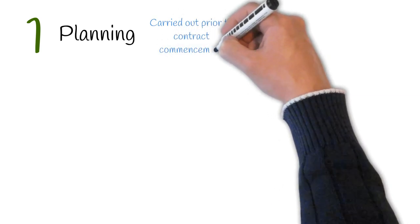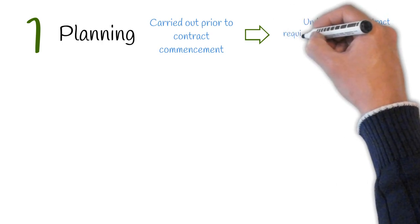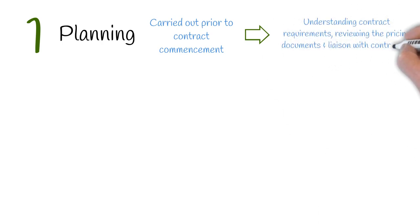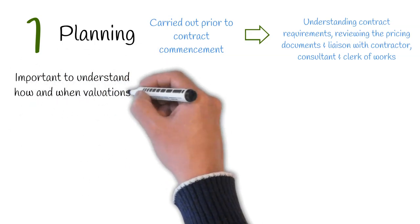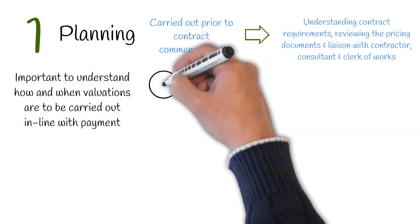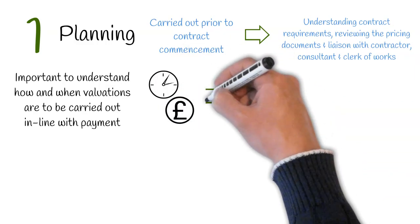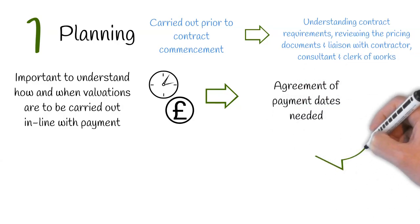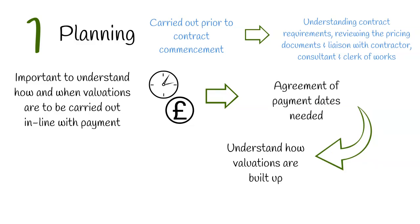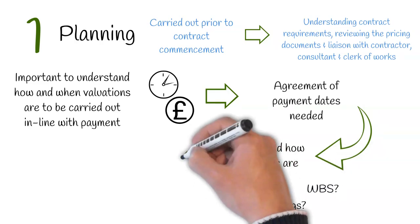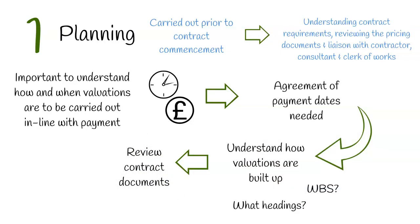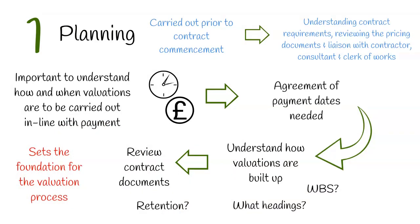Let's start by looking into Stage 1: Planning. This is carried out prior to the contract commencement and includes understanding the contract requirements, reviewing the pricing documentation, and liaison with the contractor, consultant and clerk of works. During this stage it's important to understand how and when valuations are carried out in line with the payment process. This means there needs to be an agreement, if not stated in the contract, of the schedule of payment dates with the employer, and an understanding of how the valuation needs to be built up under various headings, such as whether there is a works breakdown structure to adhere to. The contract documents will need to be reviewed, and factors like retention considered. Ultimately, this stage needs to lay the foundation for the interim valuation process.